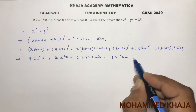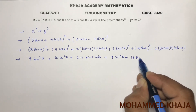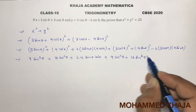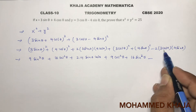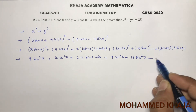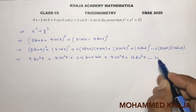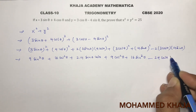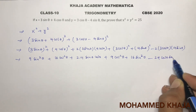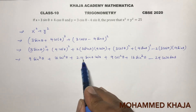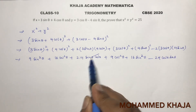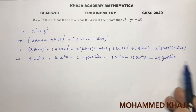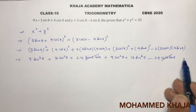(4 sin theta) squared is 16 sin squared theta, minus 2 into 3 into 4, which is 24 cos theta sin theta. Now, 24 sin theta cos theta and minus 24 sin theta cos theta cancel each other out.